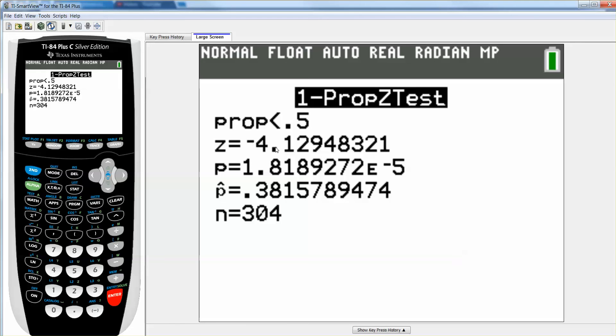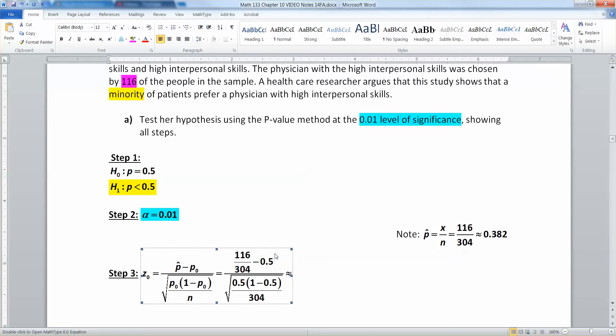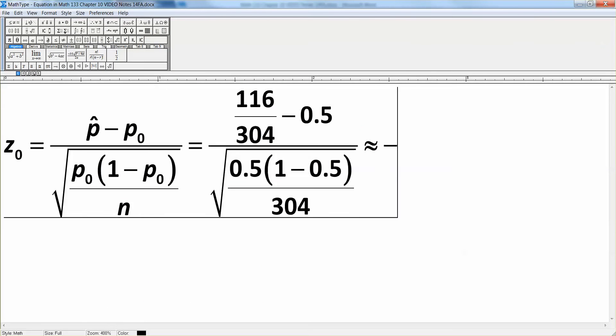And, there you have it. See the negative 4.129? That's your Z statistic. Whoop. Come back. So, this is negative 4.129. Done.